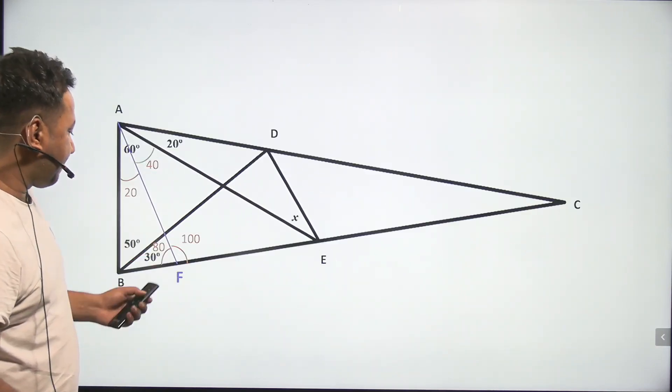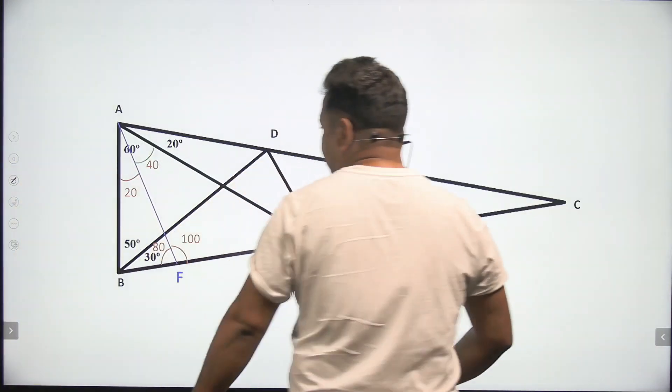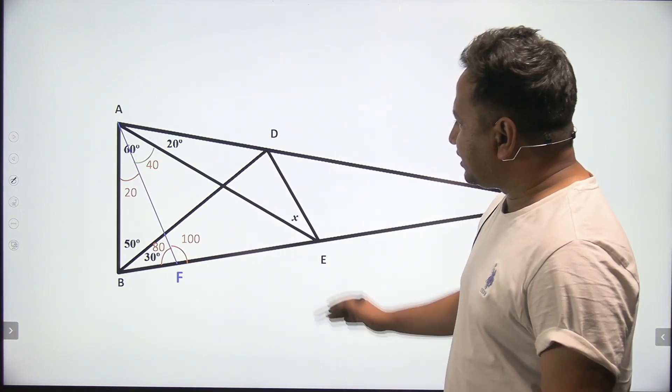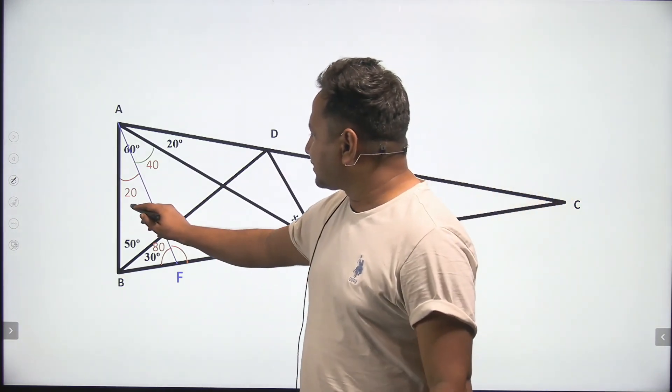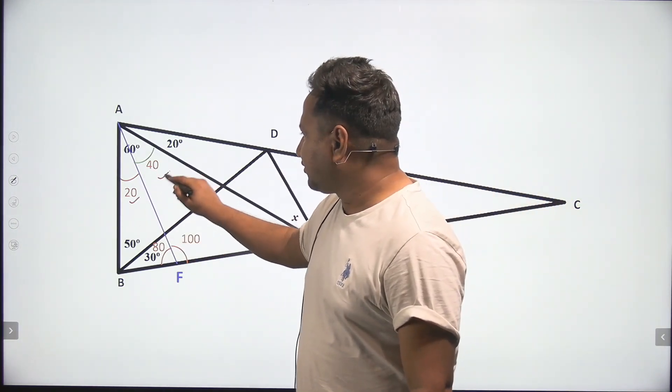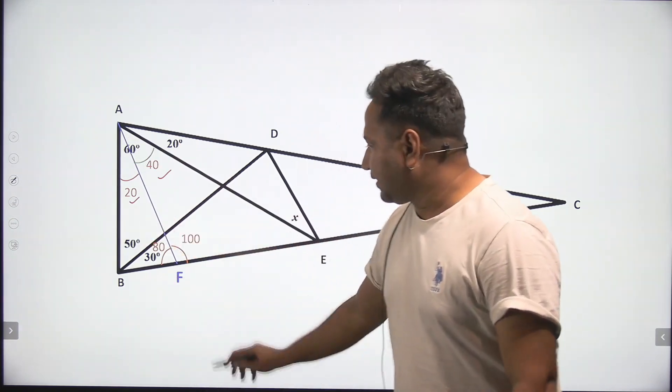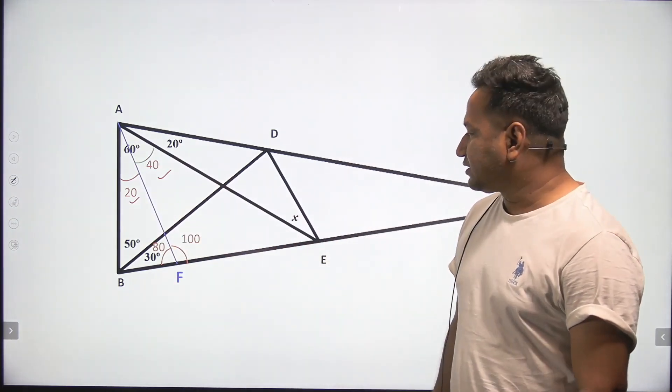Now based on that, I have just marked a few angles. This thing is 20, this will be 40, of course, because this whole was 60. And if this is 80, this will be 100.